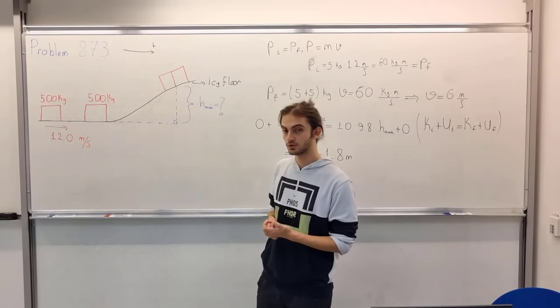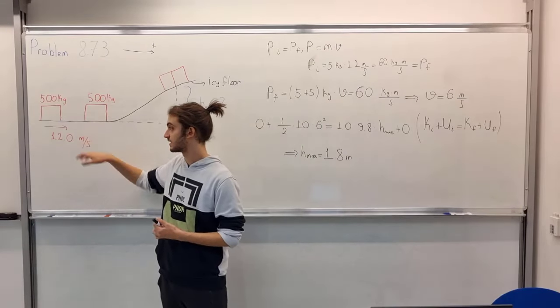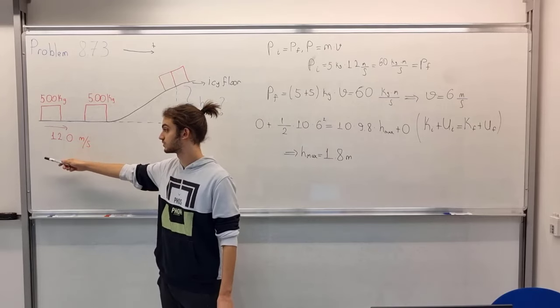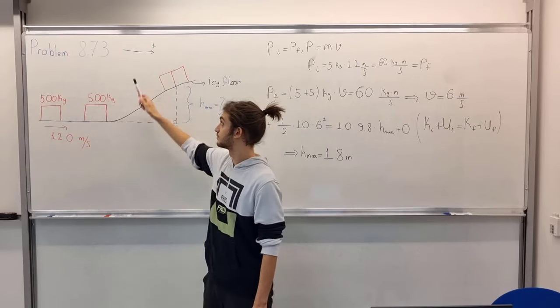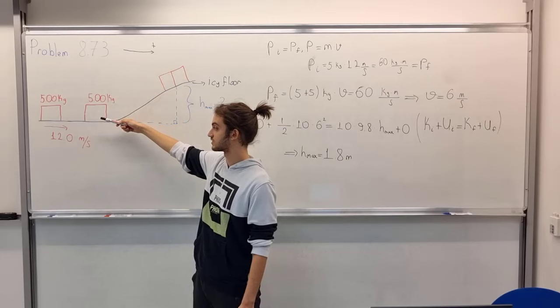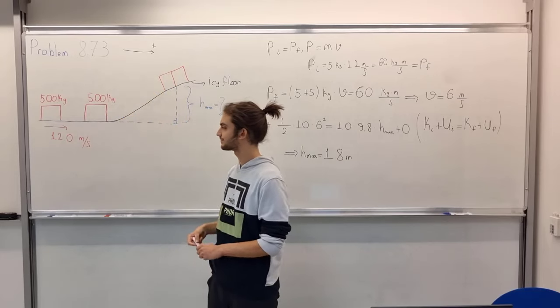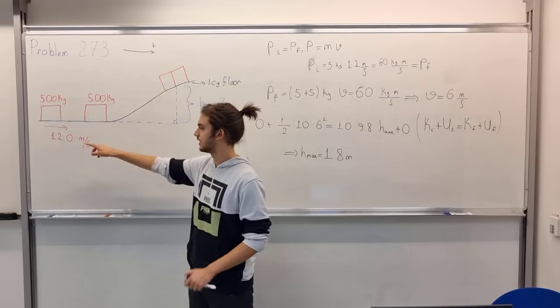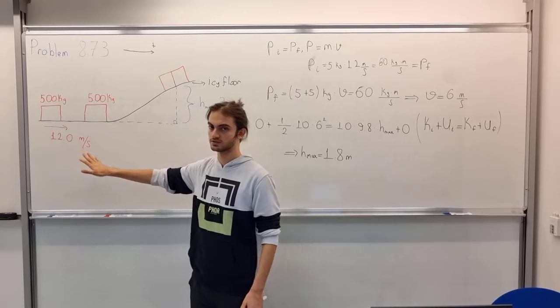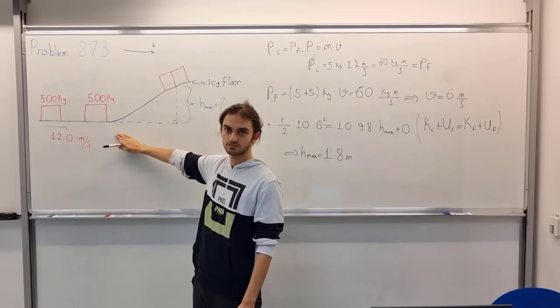In the question we have two objects. The one on the left is going in the positive x-direction with a speed of 12 meters per second, and the other is at rest.